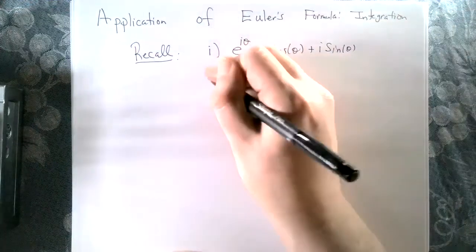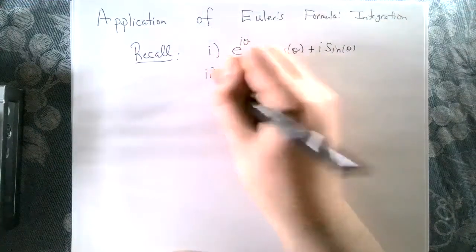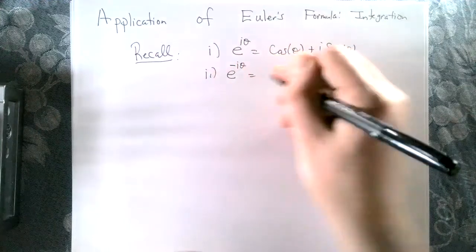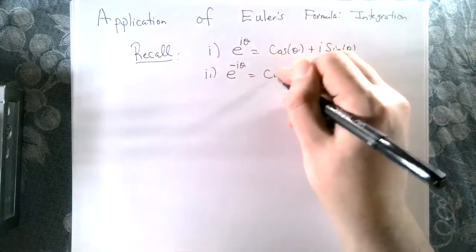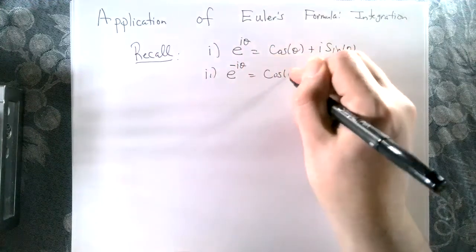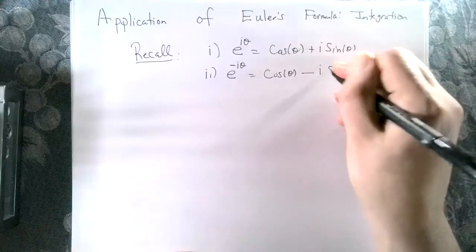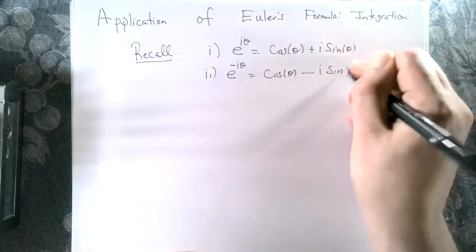Let's also recall that e to the minus i theta equals cosine of theta minus i sine of theta.